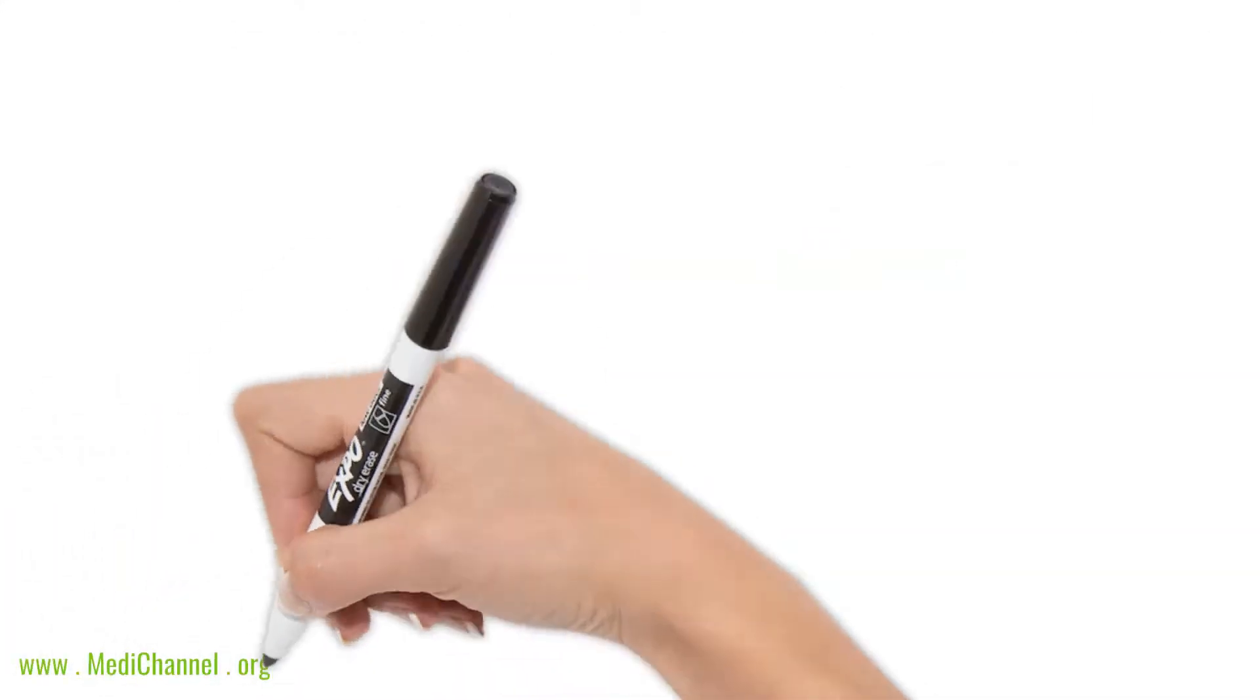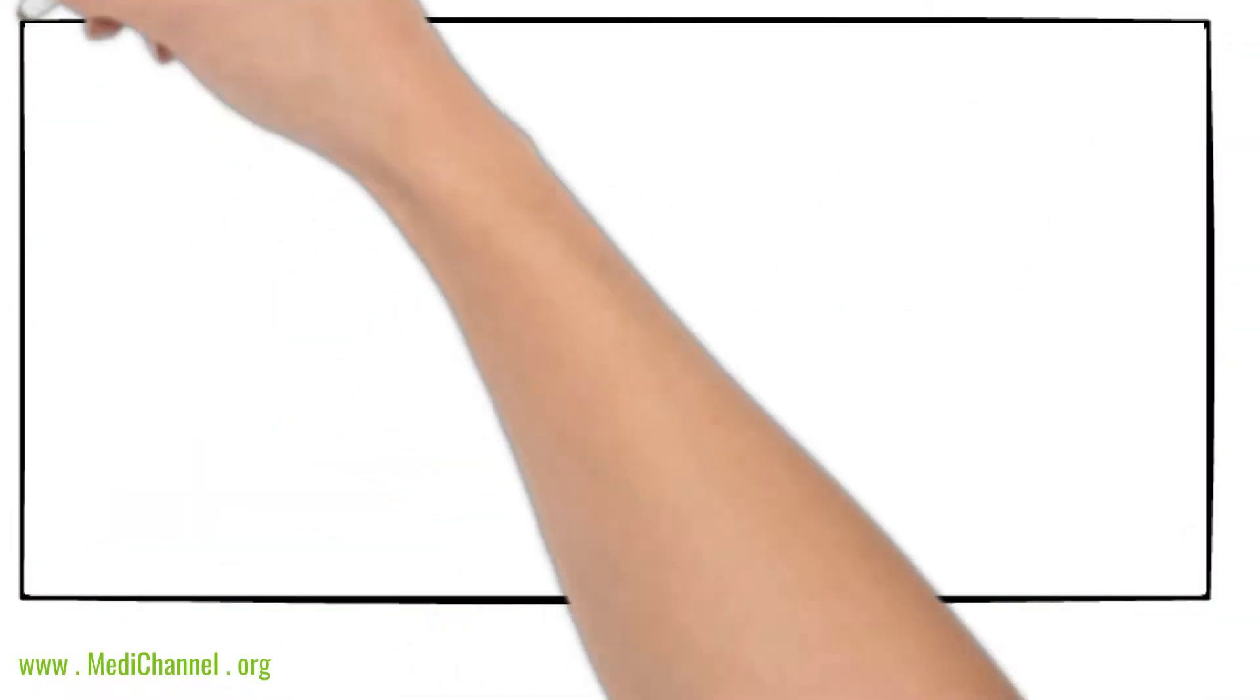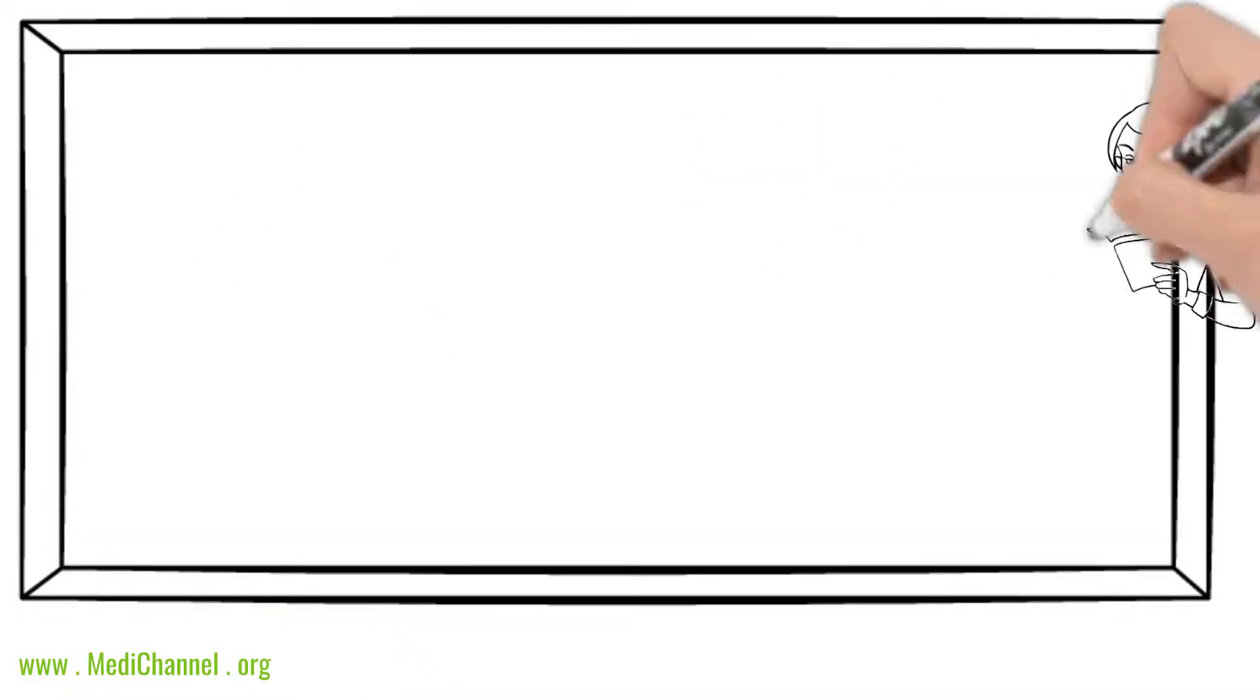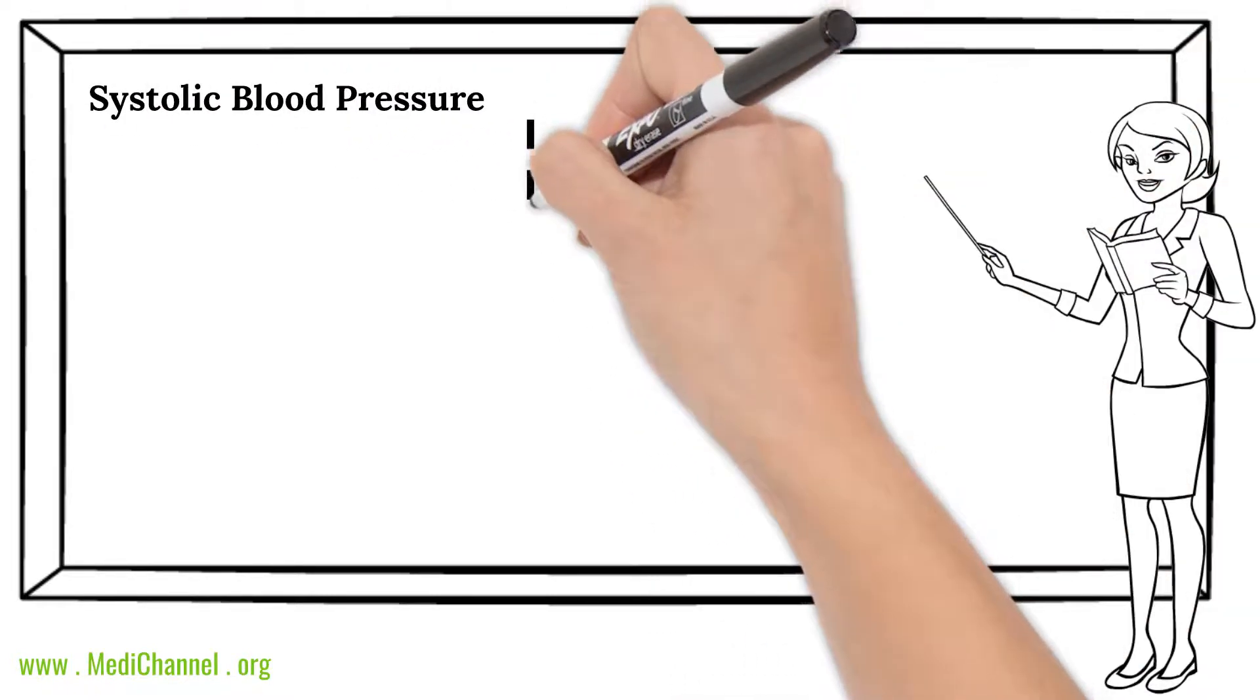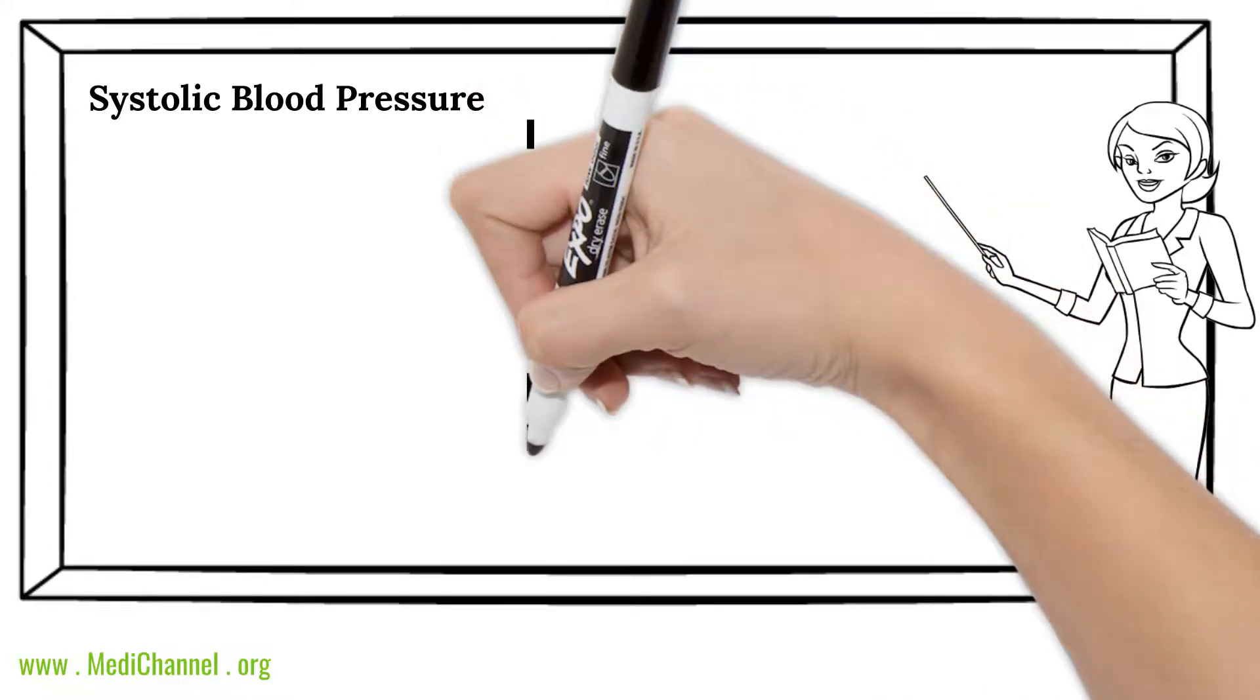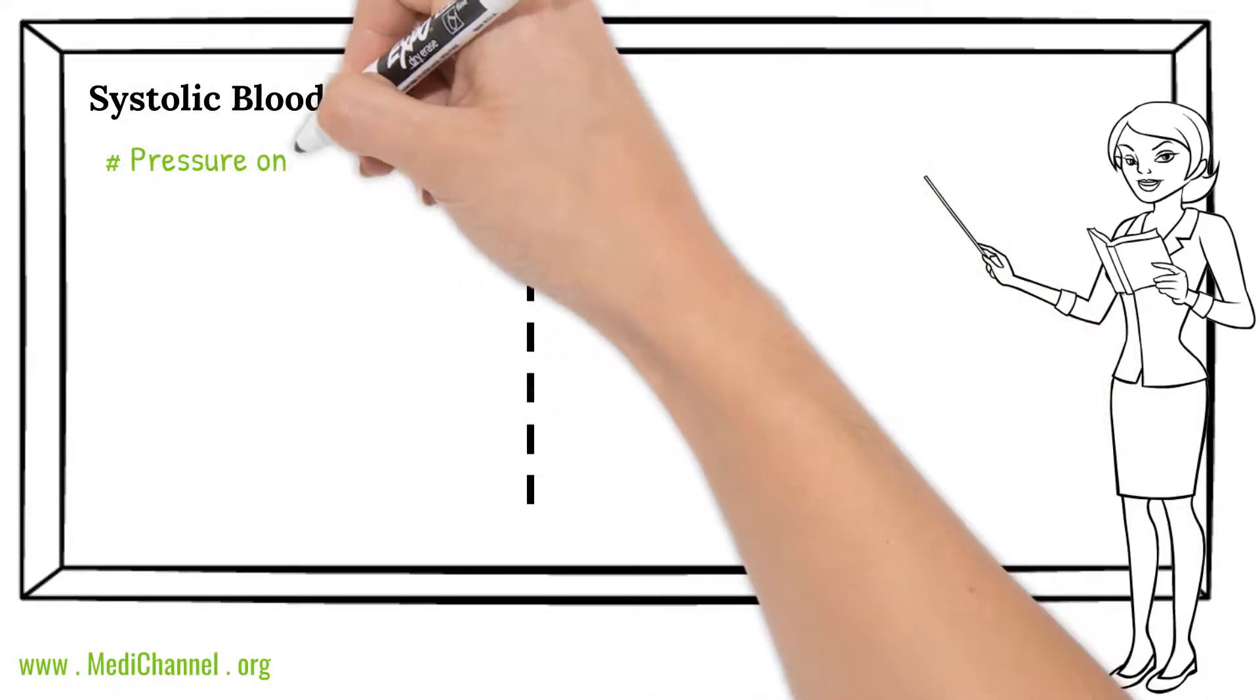The higher number is called systolic blood pressure. That is the pressure on blood vessels at the time the heart squeezes blood out through the aorta. The lower number is called diastolic blood pressure. That is the pressure on blood vessels when the heart muscles are fully relaxed.